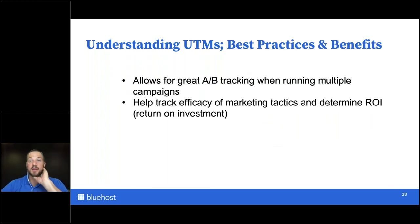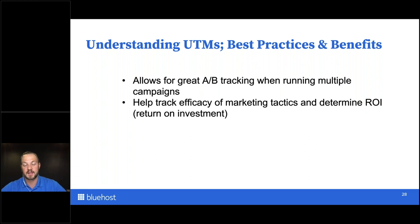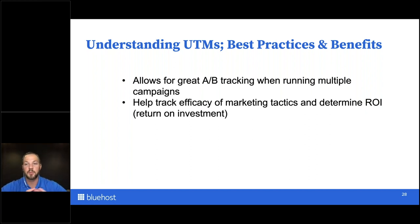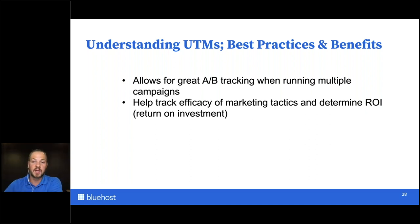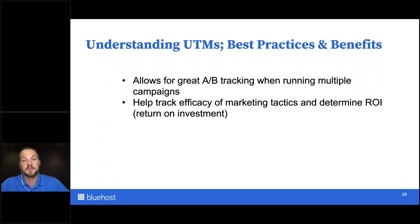A couple of best practices and benefits of using UTM parameters: it allows for great A/B tracking. For those unfamiliar, A/B is when you have two different ad sets — maybe one has a large picture of someone using your product with small text benefits, and another has a list of features with a smaller picture. You can put both ads out into the world. After a while, more people will click on one over the other depending on your target audience's preference. You can look at the UTM details to see which ad performed better, and over time develop patterns telling you which ad set converts best for your audience.